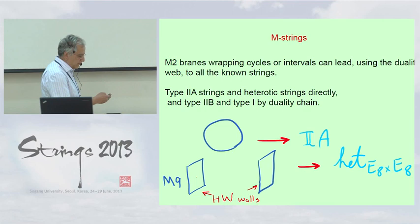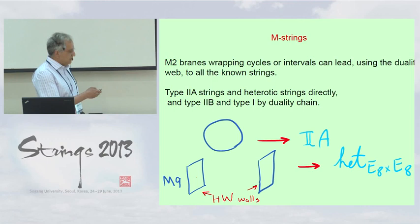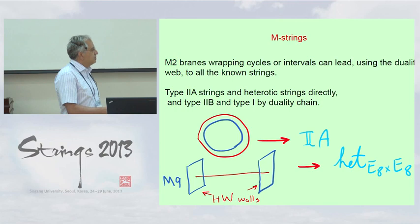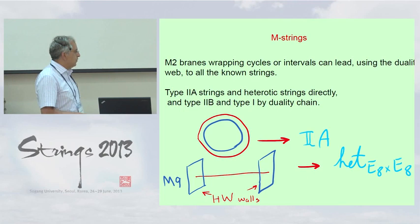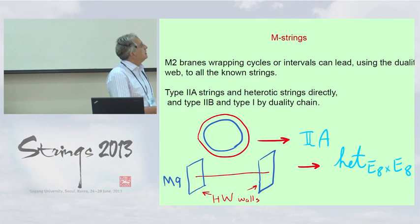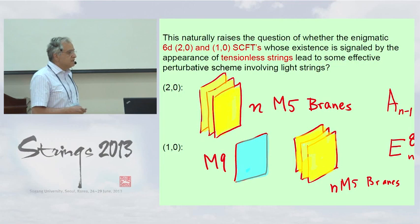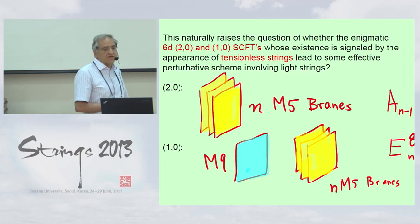By now we are familiar with the important relation between M2 branes of M-theory and string theories. In particular, whenever we get some one-dimensional object we would like to wrap the M2 brane around it and get a string. Wrapping the M2 brane around the circle gives the IIA string, suspending the M2 brane between the Horava-Witten walls or M9 branes gives the heterotic E8 × E8 strings. This naturally raises the question of whether the enigmatic (6,2,0) or (1,0) superconformal theories, whose existence is signaled by the appearance of tensionless strings, leads to some effective perturbative scheme involving light strings.